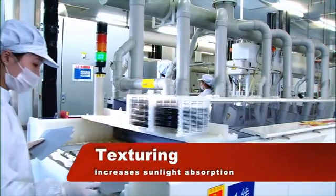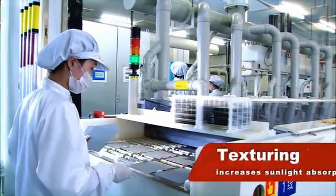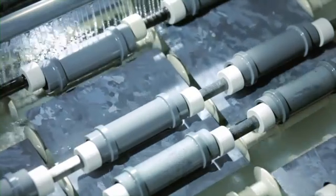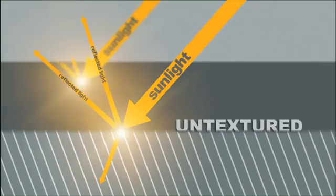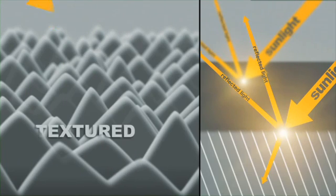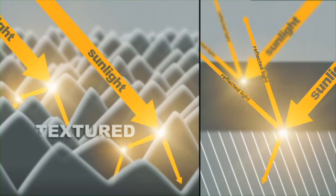Cell production begins with SunTech's patented texturing process. An etching solution forms pyramid-like structures on the surface of the monocrystalline silicon wafer, reducing reflectivity from over 30% to around 11%.